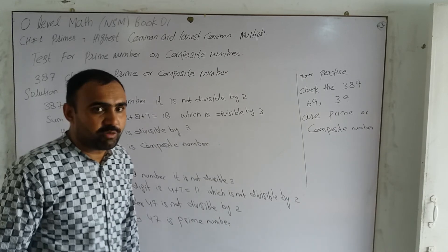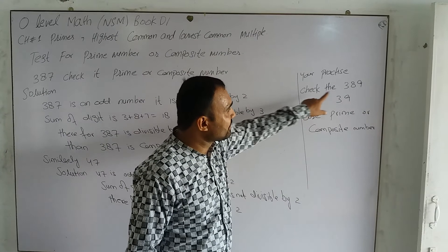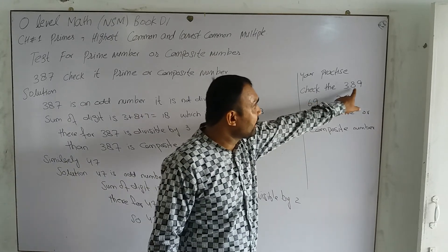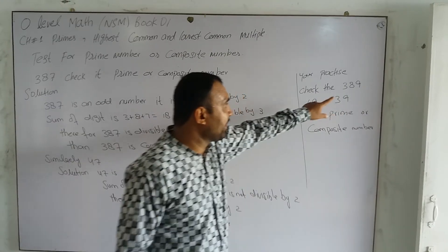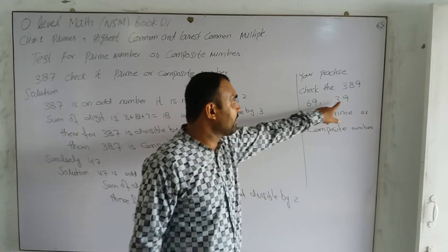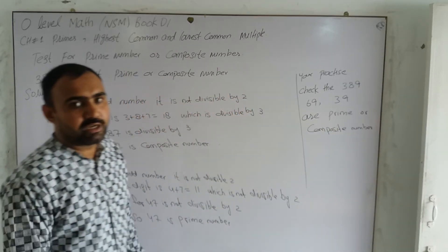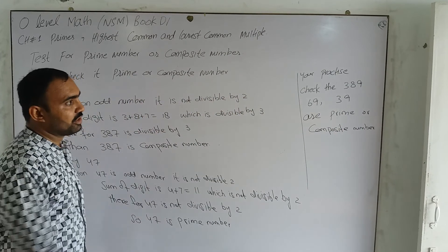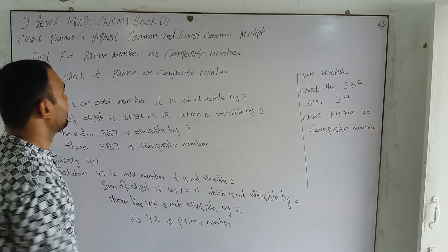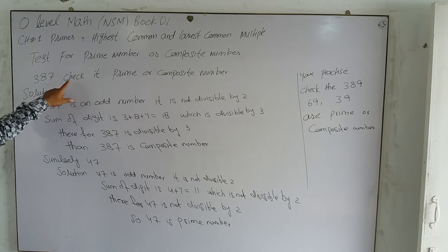For your practice, check whether 389, 379, and 395 are prime or composite numbers.